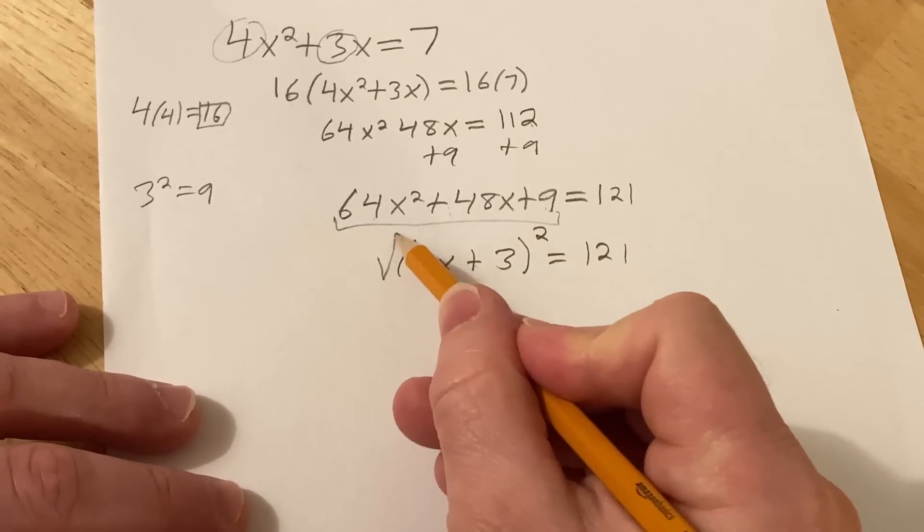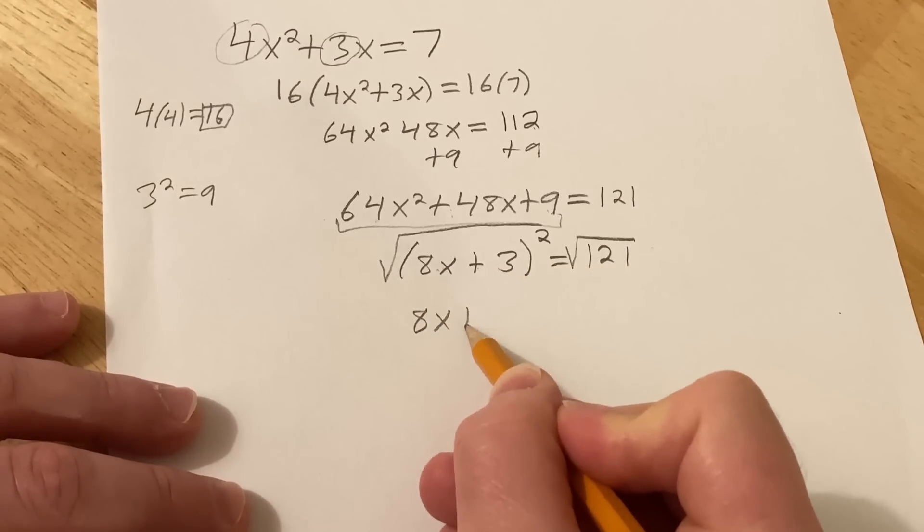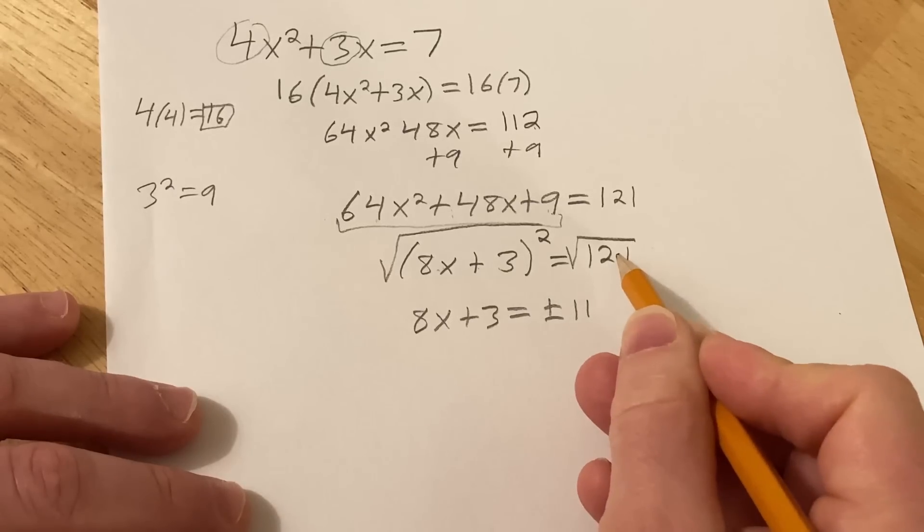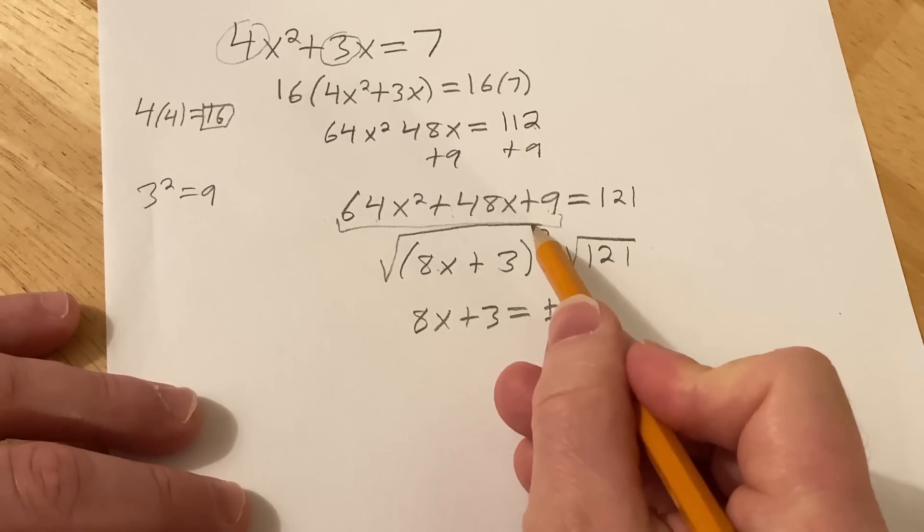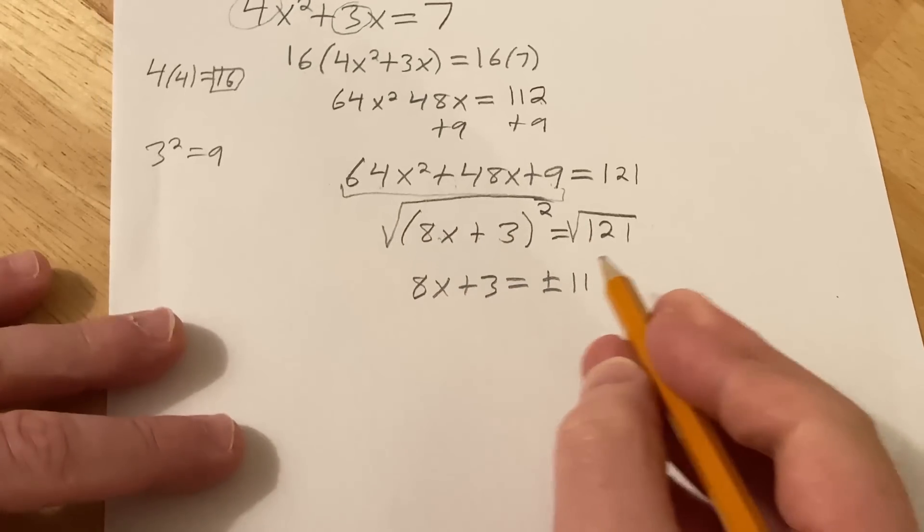And now it's easy. You take the square root of both sides. You have 8x plus 3 equal to plus or minus 11. Because the square root of 121 is 11. And whenever you take the square root of a variable squared, you want to put a plus or minus there.